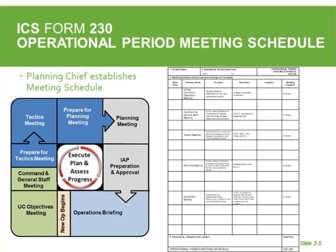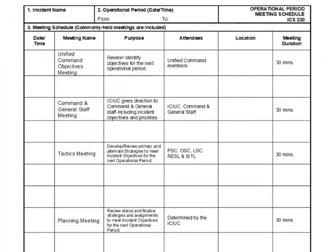Now that we've entered the planning P cycle, we need to establish a meeting schedule. The meeting schedule is the tool that drives the planning process. It is the planning section chief's job to establish the meeting schedule. This schedule should be posted everywhere — on the bathroom doors, on the front of the chow line, all around your incident command post — so people understand when the meetings are and who needs to go to what meetings. It's the planning section's job to distribute this schedule and make sure everybody knows when meetings are happening.